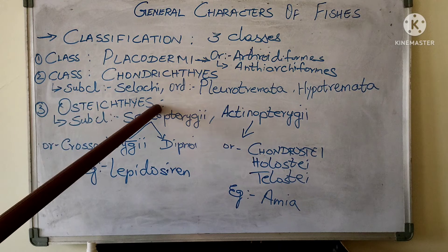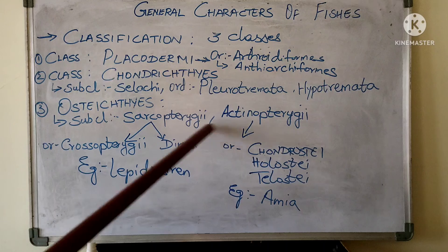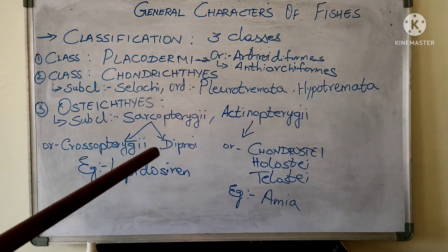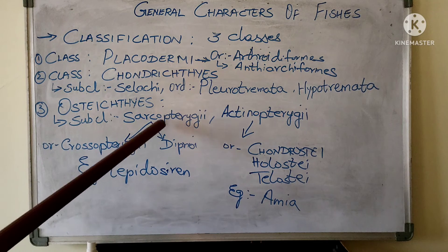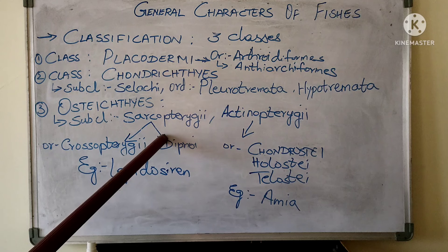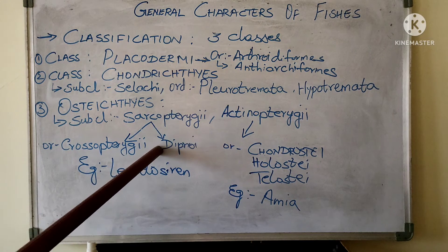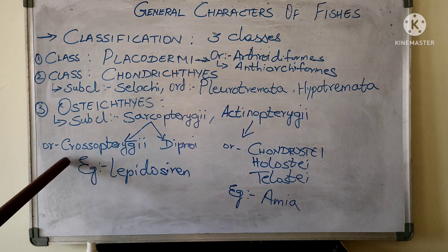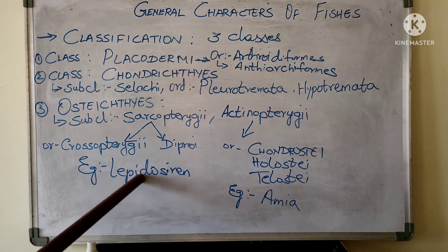Class Osteichthyes is further divided into two subclasses: Sarcopterygii and Actinopterygii. In Sarcopterygii, fleshy lobe paired fins are present, internal nostrils are present, and two dorsal fins are present. This subclass is further divided into two orders: Crossopterygii and Dipnoi. An example is Lepidosiren.